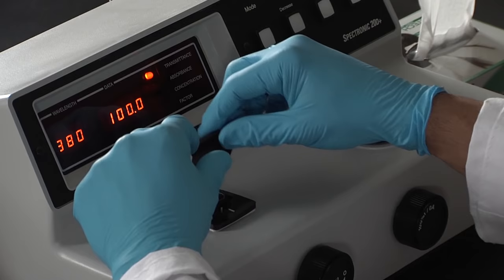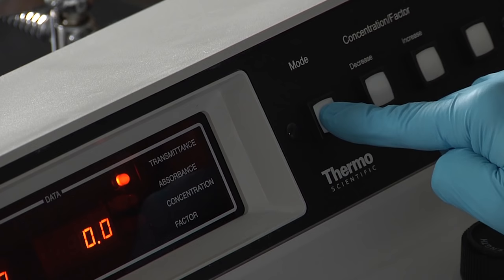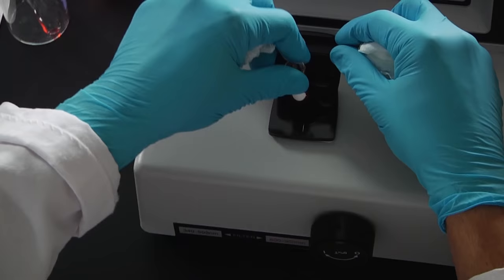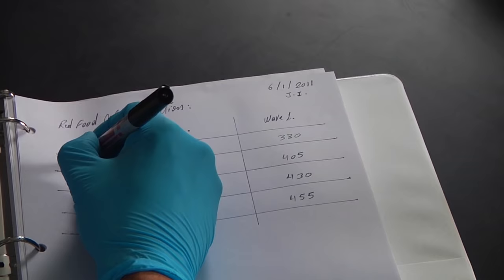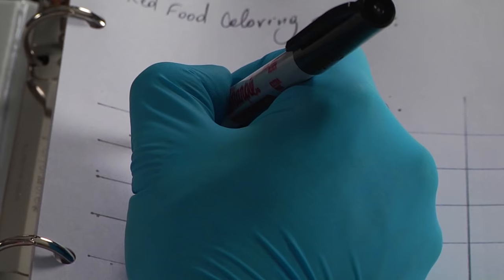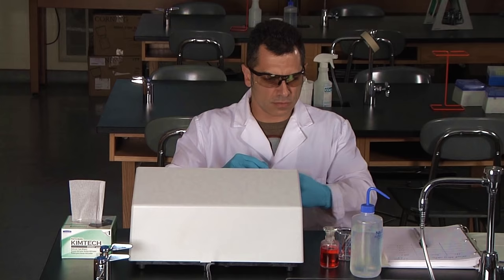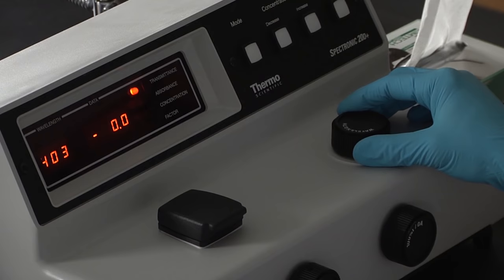Remove the cuvette with the blank solution. Now set the display mode to absorbance by pressing the mode control key. The second cuvette contains MilliQ water and red food coloring. This is our sample. The absorbance of the sample is 0.845. Press the mode control key to select transmittance. The transmittance for the sample is 14.2%. Increase the wavelength by 25 nanometers to 405.